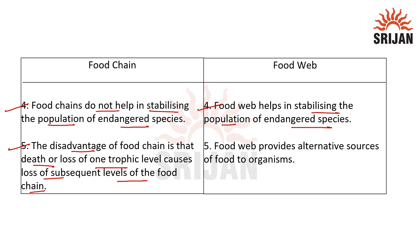If one trophic level is removed or goes extinct, the entire food chain is going to be disrupted. Whereas in the case of food web, it provides an alternative source of food to the organism, and hence the balance would be maintained.